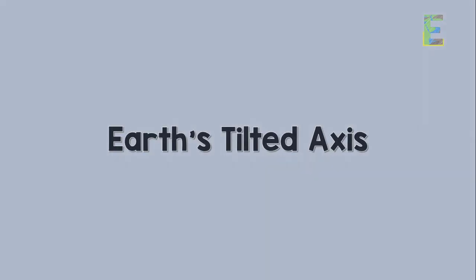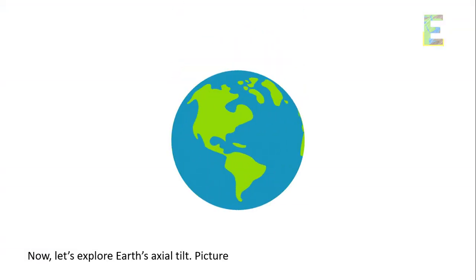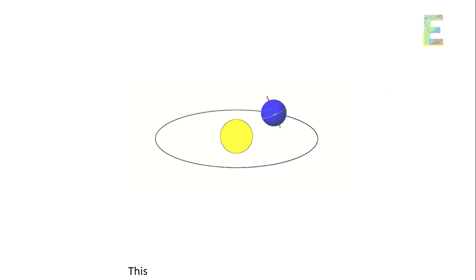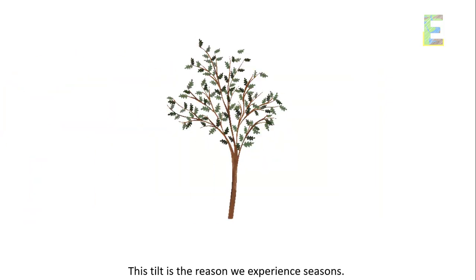Earth's tilted axis. Now, let's explore Earth's axial tilt. Picture the Earth slightly tilted on its axis, about 23.5 degrees. This tilt is the reason we experience seasons.